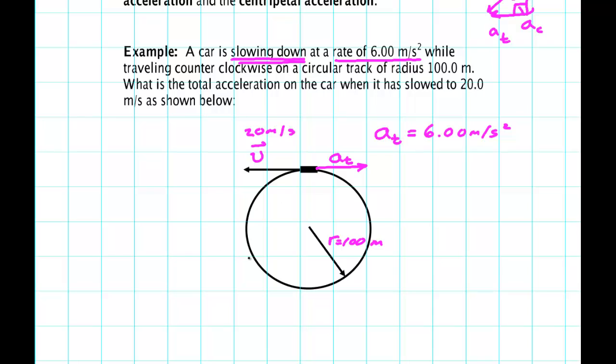And it says it has slowed down to a speed of 20 meters per second. Well, it's got an acceleration downward, the centripetal acceleration. I can find that: AC is v squared over R, so that's 20 meters per second squared divided by 100 meters, and I get 4 meters per second squared.